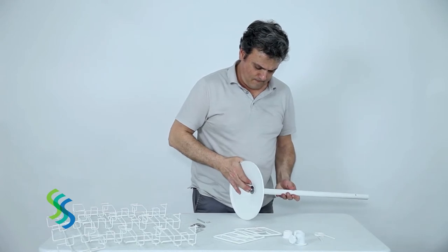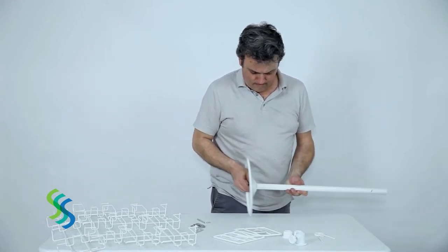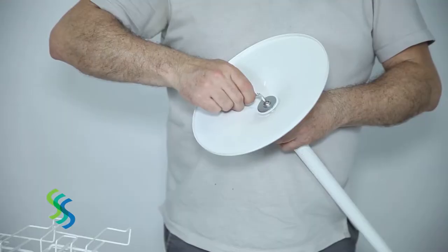To begin assembly, attach the base to the pole. Secure the base with the bolt with a washer between the bolt and the pole. Use the allen wrench to tighten.